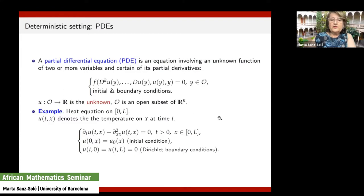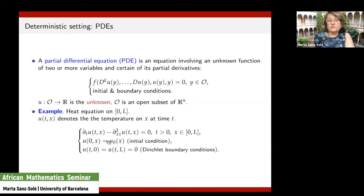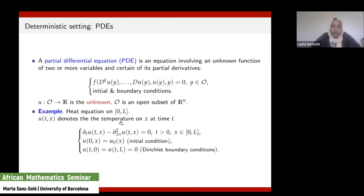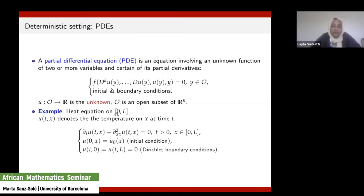An important and very popular example is the heat equation, which goes back to Fourier in the 19th century. This equation describes the evolution of the temperature of heat on a given bar — say a limited bar identified with the interval [0, L]. The heat evolves following the rule that the partial derivative with respect to t of u equals the second derivative with respect to x, and we give the temperature at the initial time spread along the interval by means of a function u₀, with Dirichlet boundary conditions at the two endpoints.